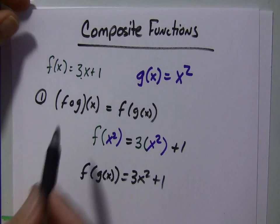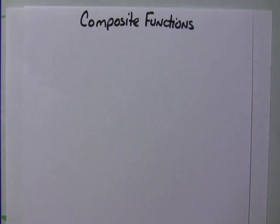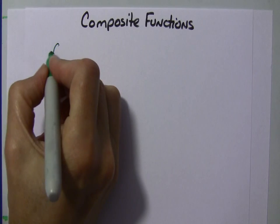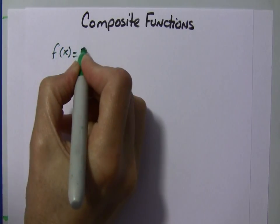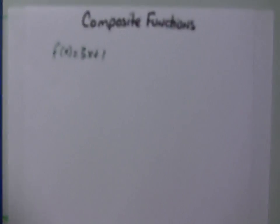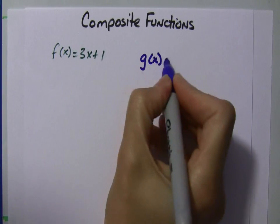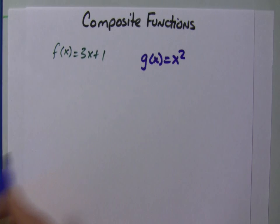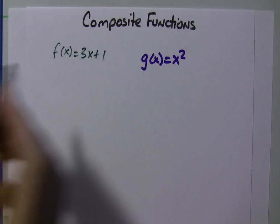Okay, let's use these same functions. I'll write them again. f of x equals 3x plus 1. g of x equals x squared.